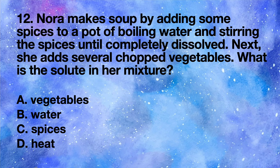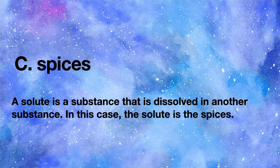Mora makes soup by adding some spices to a pot of boiling water and stirring the spices until completely dissolved. Next she adds several chopped vegetables. What is the solute in her mixture? A vegetables, B water, C spices, D heat. Answer: C spices. A solute is a substance that is dissolved in another substance; in this case the solute is the spices.